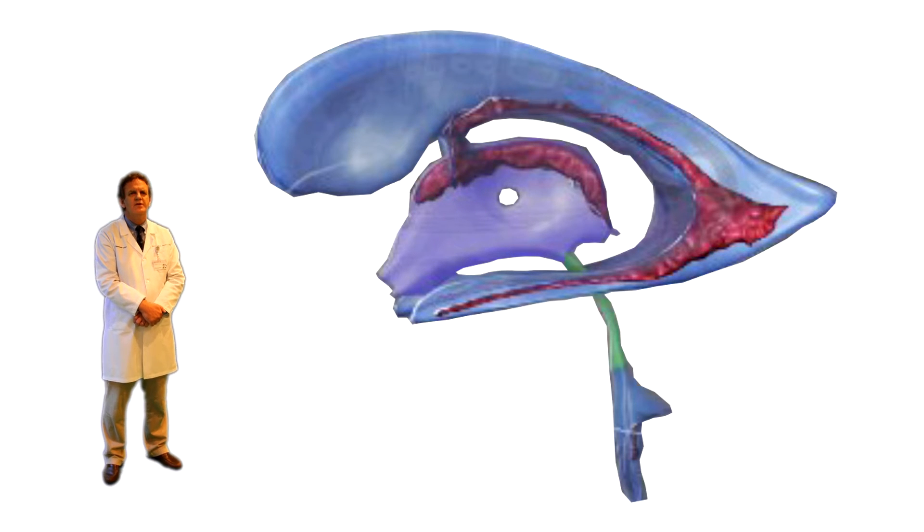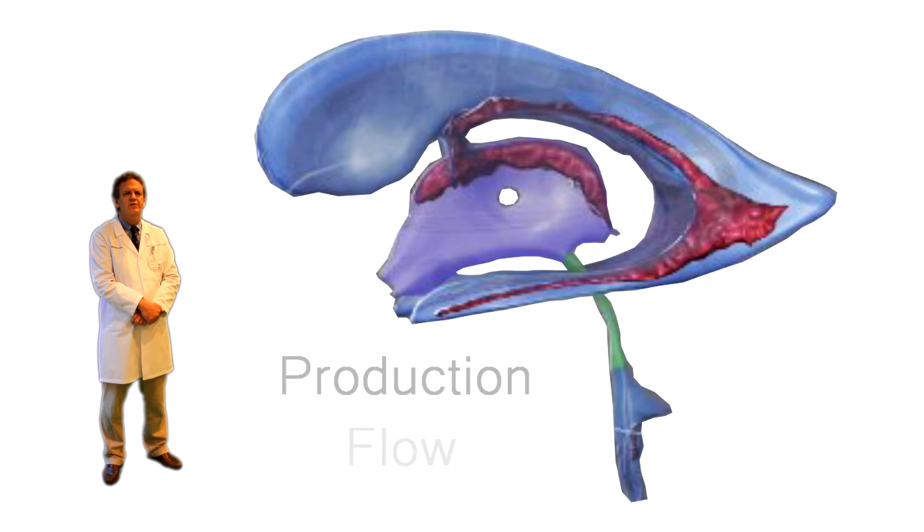Now that we have learned about the four ventricles of the brain that most of the CSF in your body passes through, we can talk a bit about the production and flow of CSF.